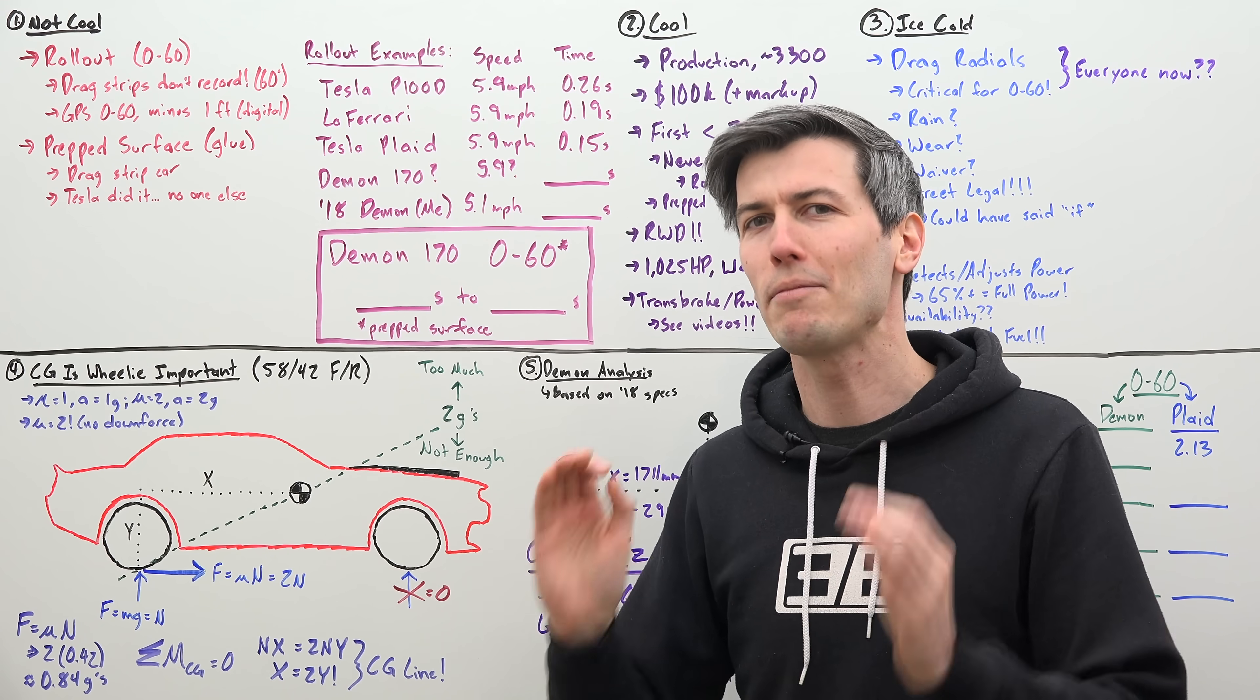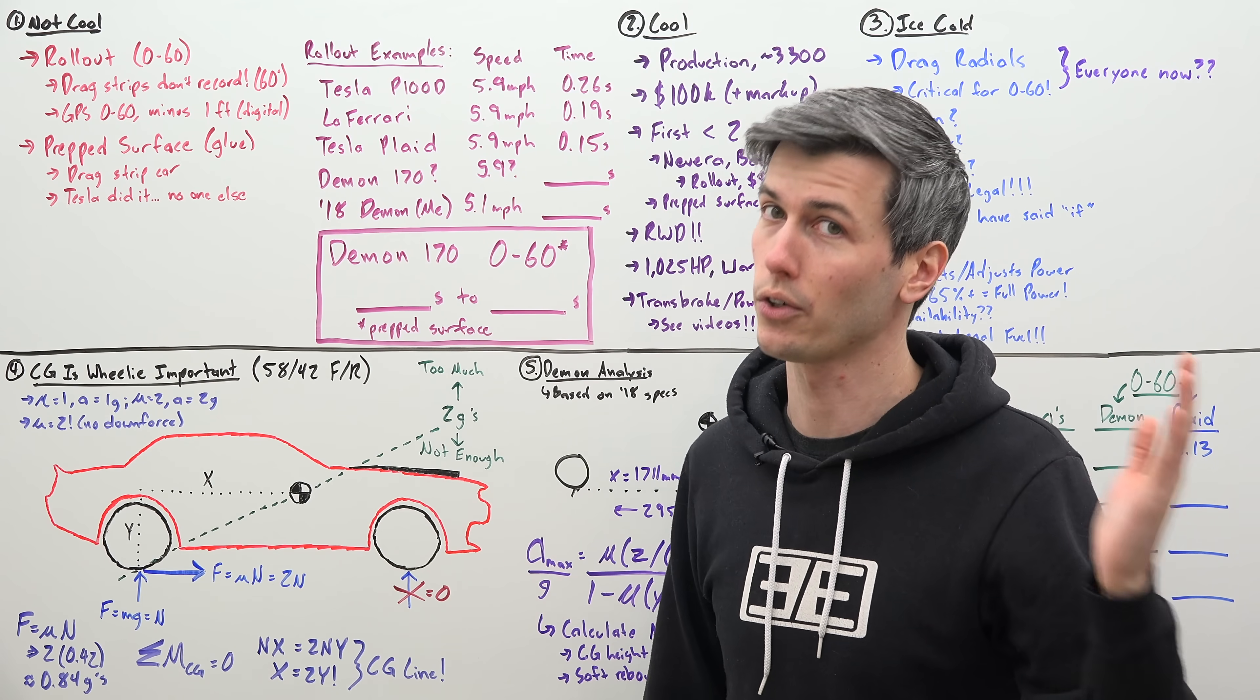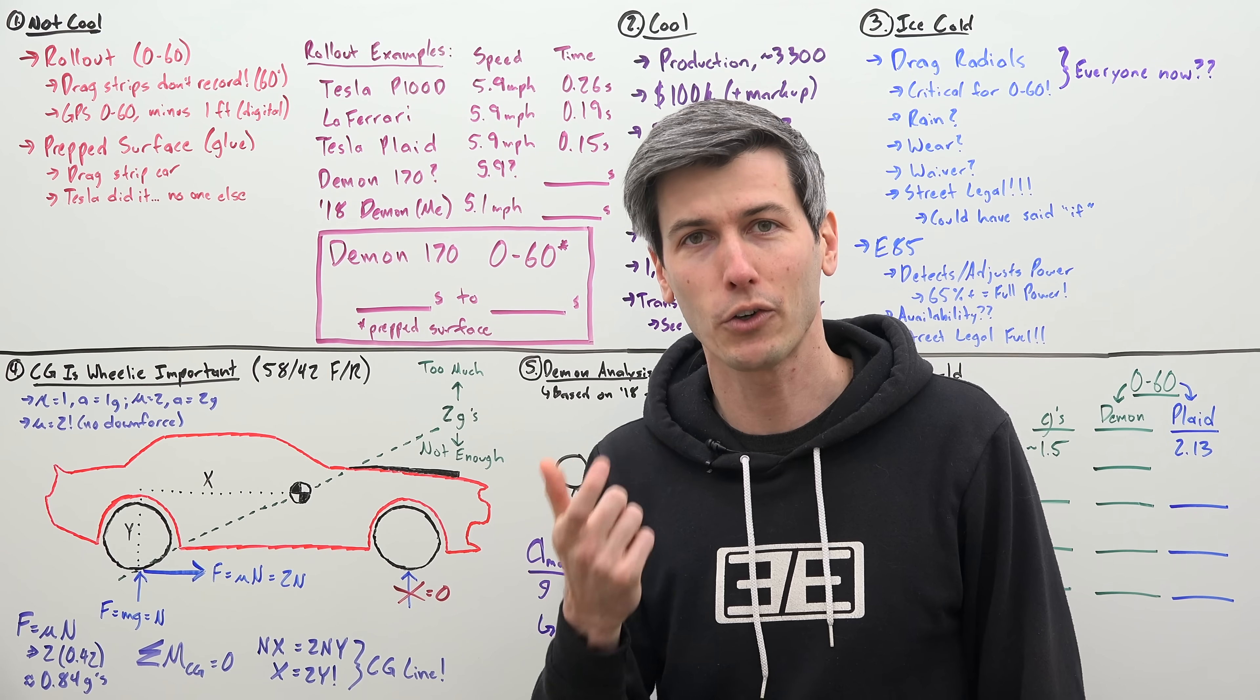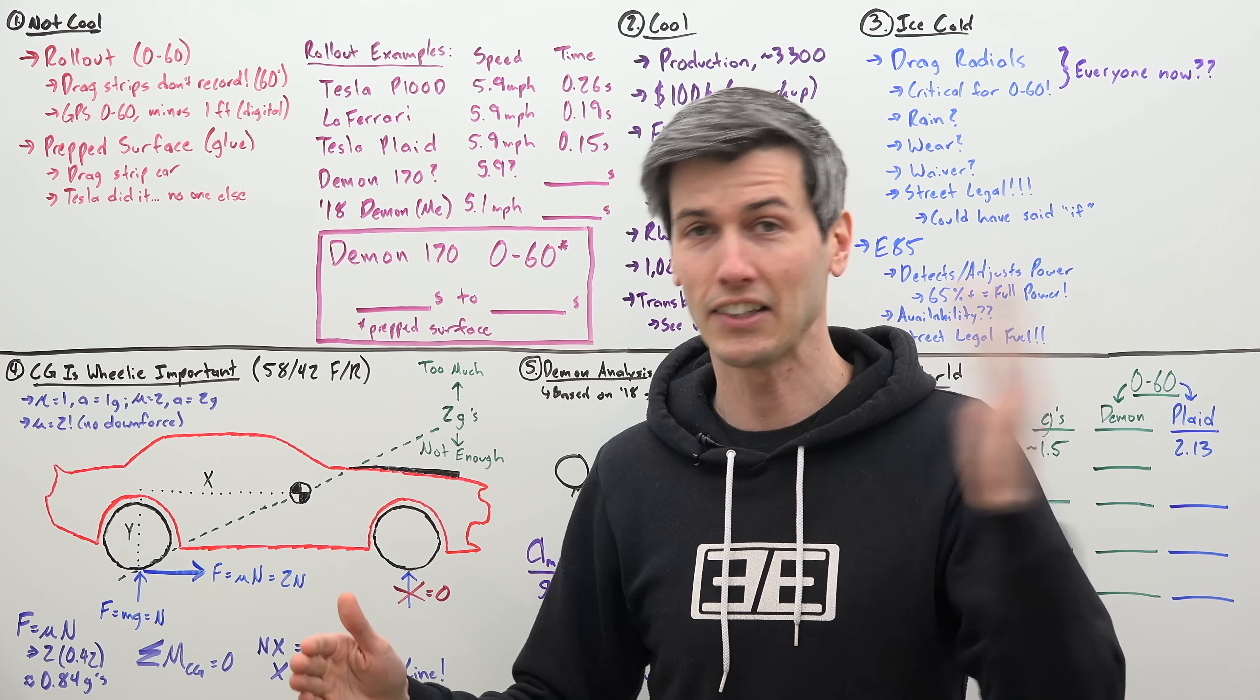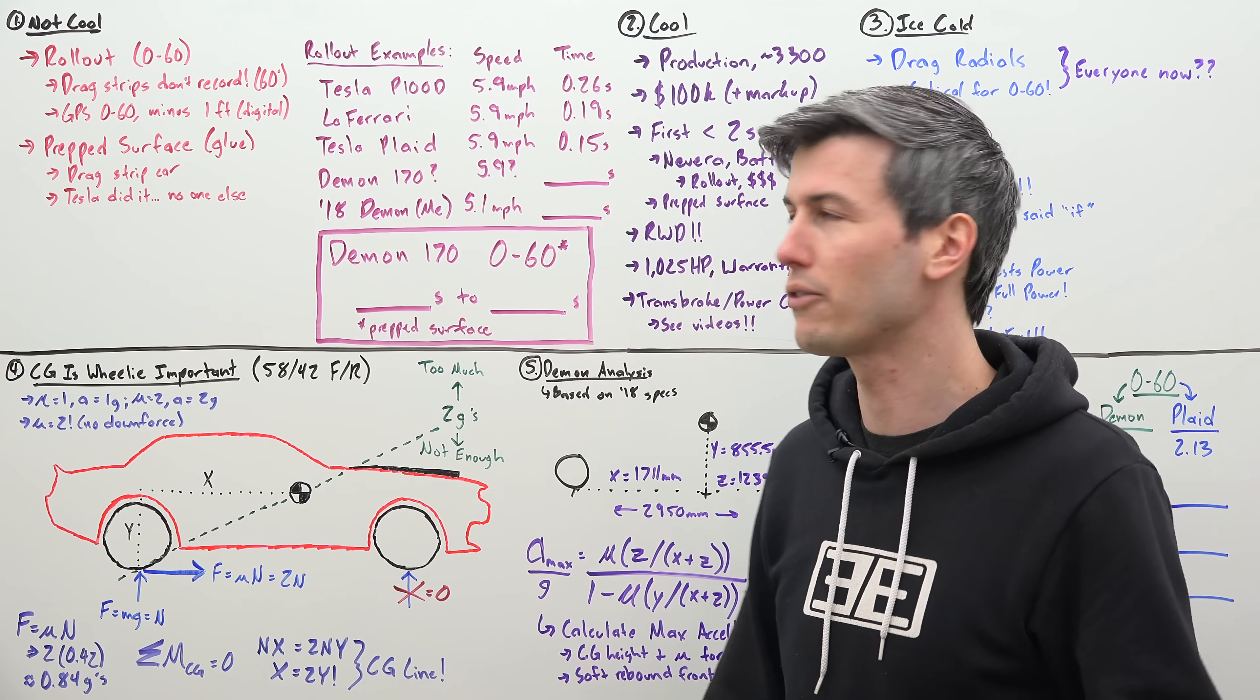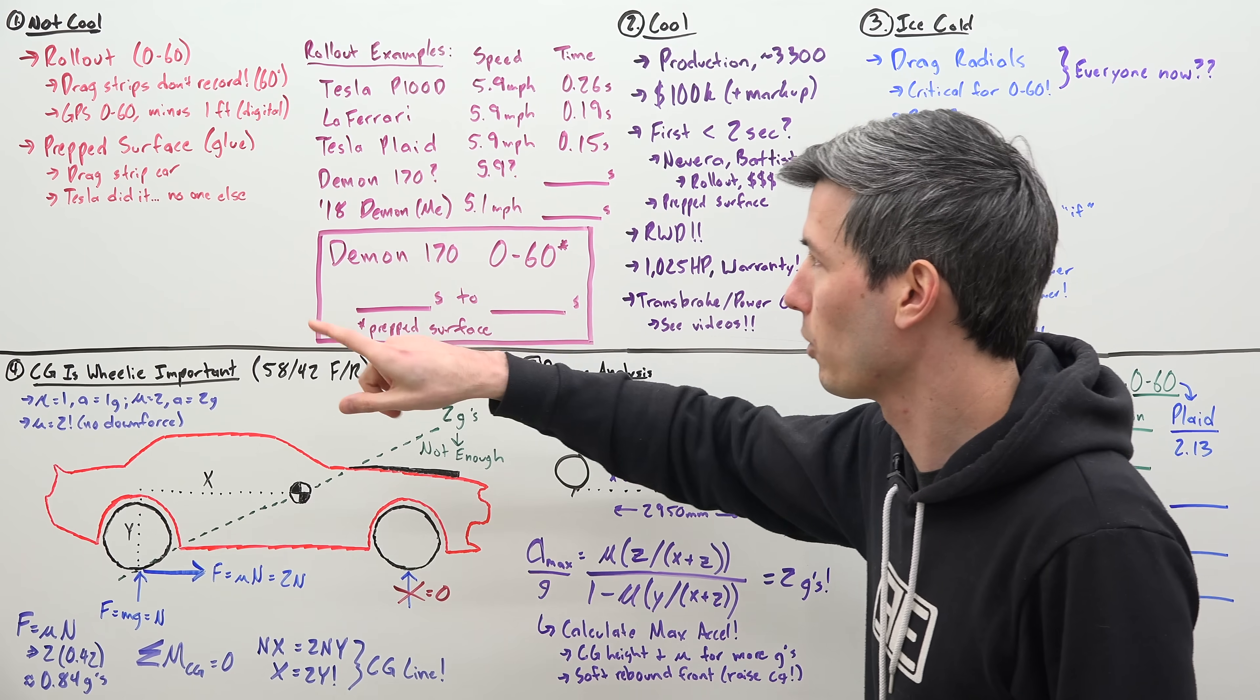Now I know some people are going to push back and say, this is a drag car on a drag strip. Surely, that's where rollout originates. It makes sense to use rollout in this case. Now let's take a moment. 0 to 60s are not measured on drag strips. They do not measure your 0 to 60. They measure your 60 foot, but that is something different. 0 to 60 is measured using a GPS. And then what they do is they delete the first foot digitally.